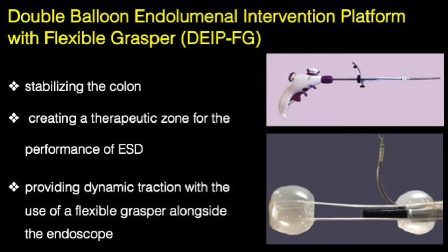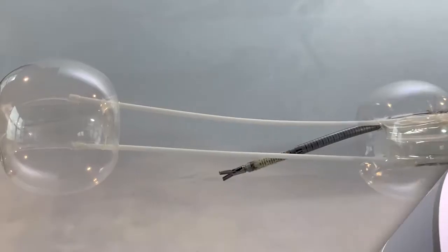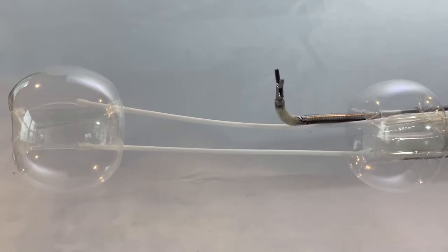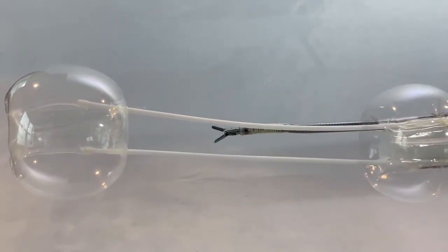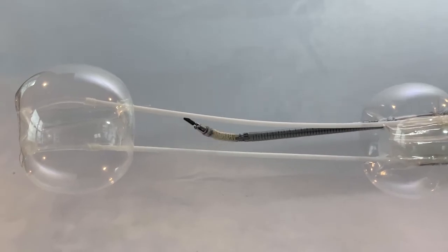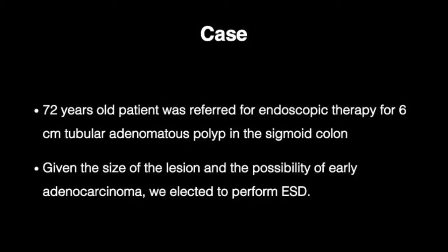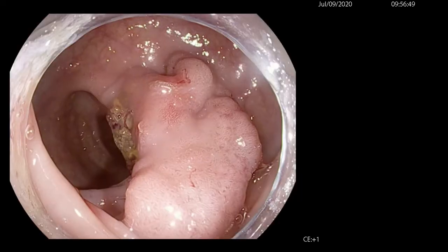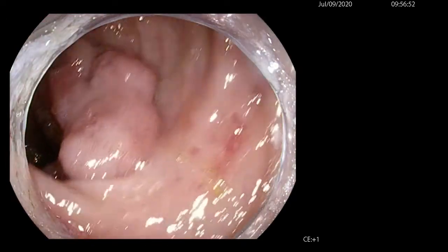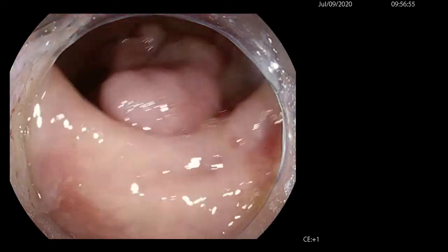In this video, we describe a double-balloon endoluminal intervention platform with a flexible grasper, which allows stabilization of the colon, creating a therapeutic zone for the performance of ESD, and provides dynamic traction with the use of a flexible grasper alongside the endoscope. Our patient was a 72-year-old referred for endoscopic submucosal dissection of a 6 cm tubular adenomatous polyp in the sigmoid colon. Given the size of the lesion and the possibility of early adenocarcinoma, we elected to do ESD. We demonstrate the usefulness of this novel technique in the removal of this 6 cm polyp.